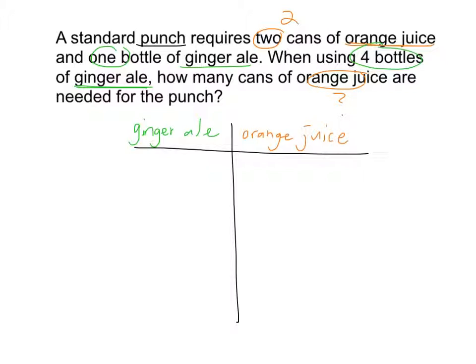Do you think it matters which column we place ginger ale and orange juice into? When we're done, you can try it the other way. Now we need to put the data into the table. How many bottles of ginger ale do we use, and how many cans of orange juice do we use to make the punch? It says here, for every one bottle of ginger ale, we need two cans of orange juice. So let's put that information into our table: one bottle of ginger ale and two cans of orange juice.